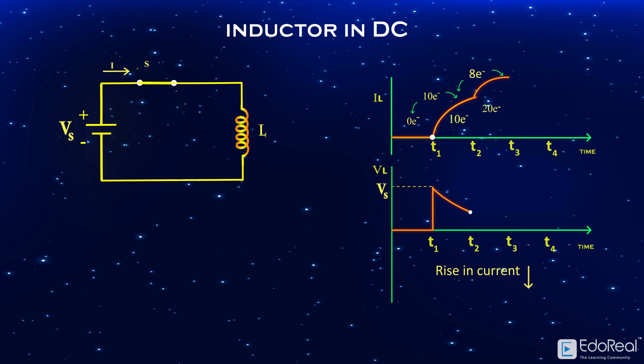By adding 10 electrons of t1 to t2 and 8 electrons rise of t2 to t3, the total electrons in t2 to t3 will be 18. As the change in current decreased, the change in flux also decreases. Due to this, the induced voltage will be decreased.